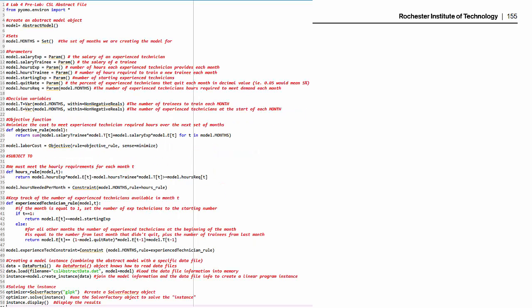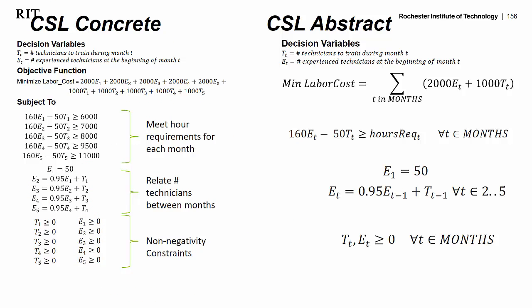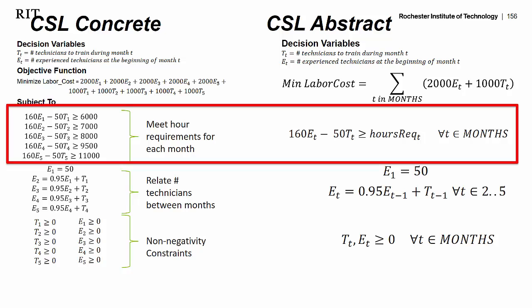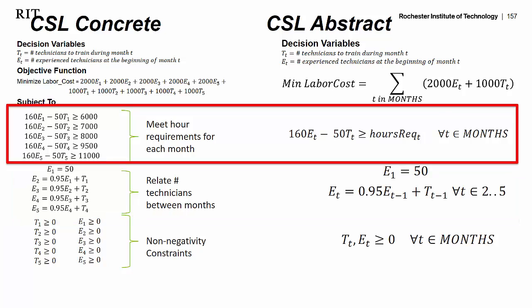This is our entire model. It will be fuzzy on your screen, but we're going to do this chunk of the model right here, which is creating constraints. Looking at our CSL concrete and CSL abstract formulations, we see two distinct sets of constraints: one set making sure we have enough experienced technicians on staff to meet our monthly requirements, and another set keeping track of how many experienced technicians we have based on how many quit and how many new trainees are now full-time experienced technicians.